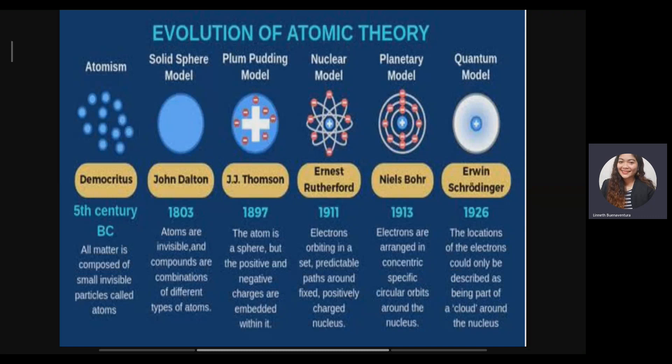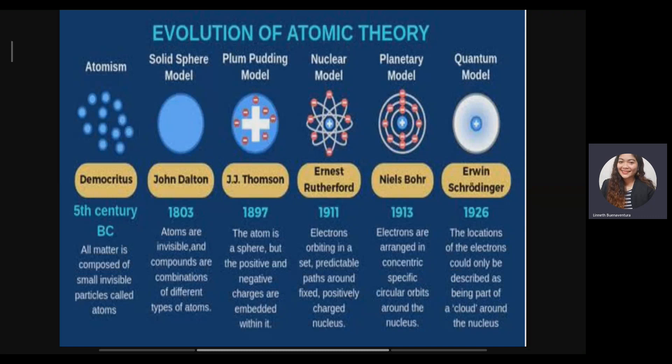Ernest Rutherford in 1911 introduced the nuclear model. According to him, electrons are orbiting in predictable paths around a fixed, positively charged nucleus. The nucleus is the center of the atom and is fixed — it doesn't move, unlike the electrons. Niels Bohr introduced the planetary model, where electrons are arranged in concentric, specific circular orbits around the nucleus.